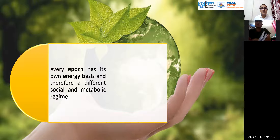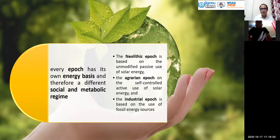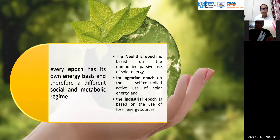Based on the way energy was used, the epoch was identified. In the Neolithic age, it was based on the unmodified passive use of solar energy — humans did not involve themselves in energy production. They used available resources such as plants or animals without processing them. This is followed by the agrarian epoch, when humans were nomadic but began to settle, trying to control resources and actively use solar energy.